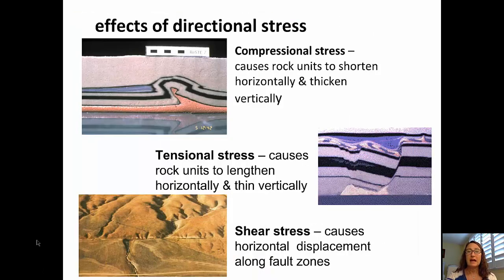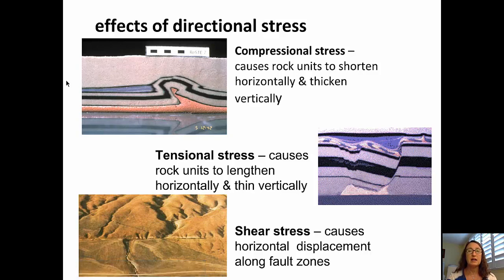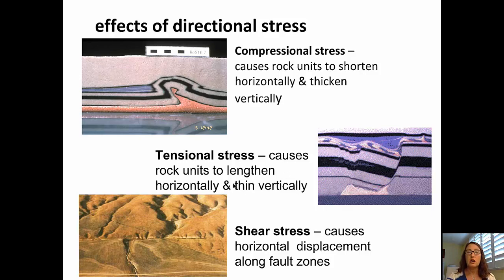We can look at some work done in labs to examine the effects of directional stress. The top left picture shows what happens when compressional stress is applied to rock units — it causes them to shorten horizontally and thicken vertically, with layers bulging upward. Tensional or extensional stress causes rock units to lengthen horizontally and thin vertically, and they may even rupture, as seen with a fault in those layers. Shear stress is horizontal displacement that occurs along a fault zone.